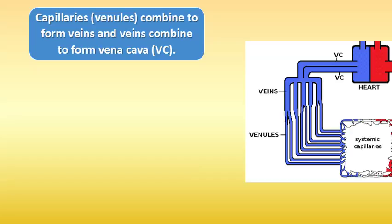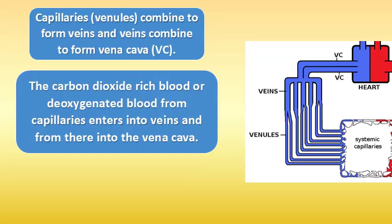Capillaries combine to form veins, and veins combine to form the vena cava. The carbon dioxide-rich, deoxygenated blood from capillaries enters into veins and from there into the vena cava.